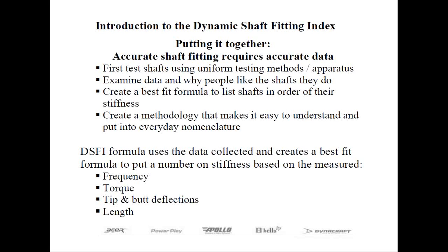We've spent years studying why certain shafts work well for some golfers and why they don't for others. So we created an index — a way to rank shafts in order of their stiffness — and we call this the Dynamic Shaft Fitting Index, or DSFI for short. We came up with a relatively simple system that club fitters could use the data with. The DSFI is based on actual cut data we accumulated, which includes the final club frequency, the cut torque, the tip and butt deflections, as well as the length, all put into an algorithm.